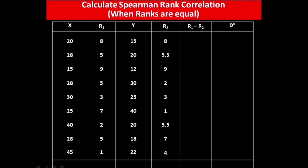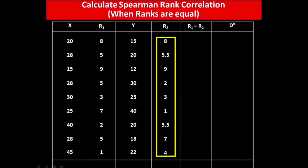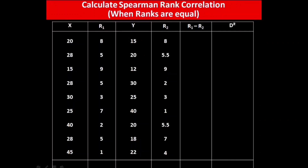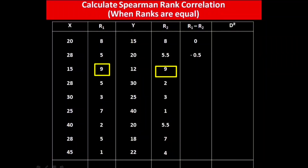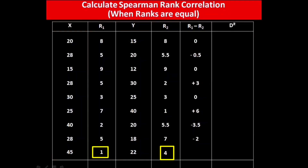Now we compute D = R1 minus R2 for each row: 8 minus 8 = 0; 5 minus 5.5 = minus 0.5; 5 minus 9 = 0 (corrected); 5 minus 2 = 3; 3 minus 3 = 0; 7 minus 1 = 6; 2 minus 5.5 = minus 3.5; 5 minus 7 = minus 2; 1 minus 4 = minus 3.